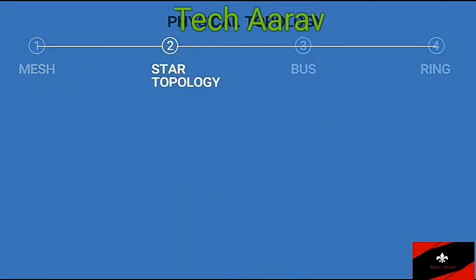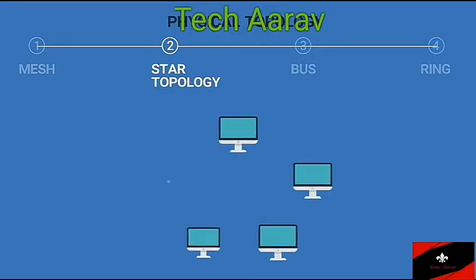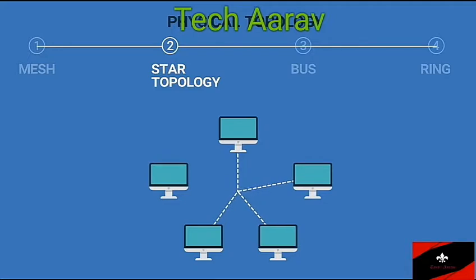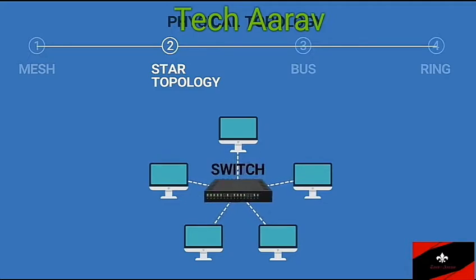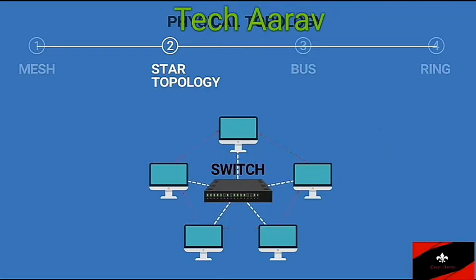Star topology: Every device in a star topology has a dedicated point-to-point link only to a central connection point, usually called a hub or a switch. The devices are not directly connected to each other. Unlike a mesh topology, a star topology doesn't allow direct traffic between devices.